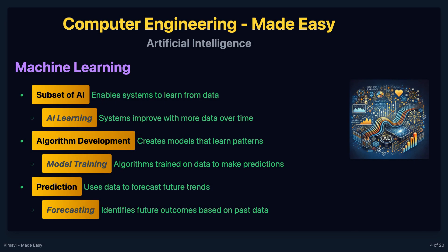Machine learning, or ML, is a subset of AI that involves the development of algorithms that allow computers to learn from and make predictions based on data. The key idea is to enable machines to learn from experience without being explicitly programmed.